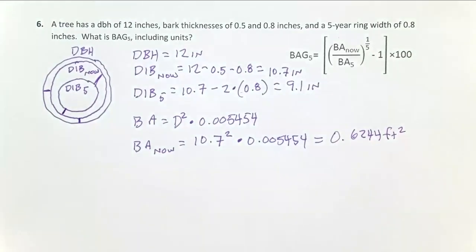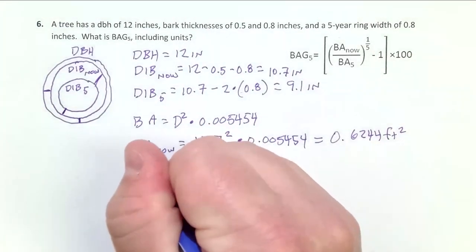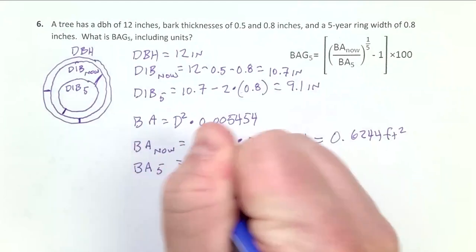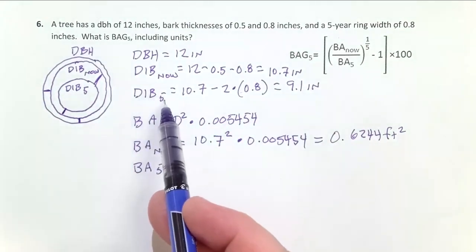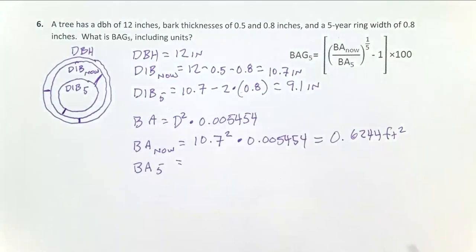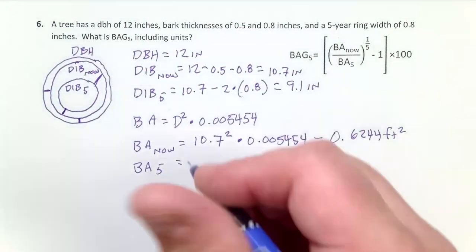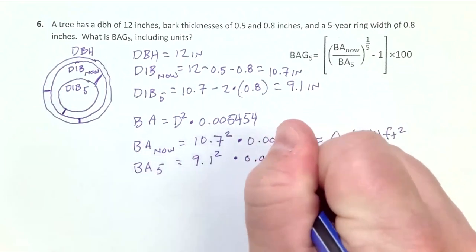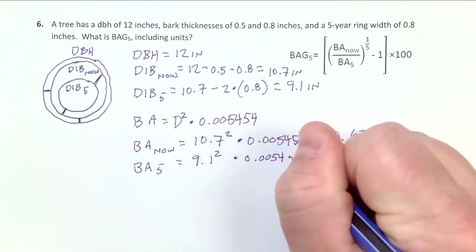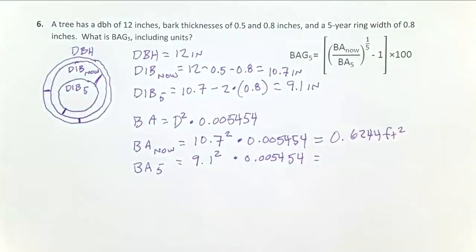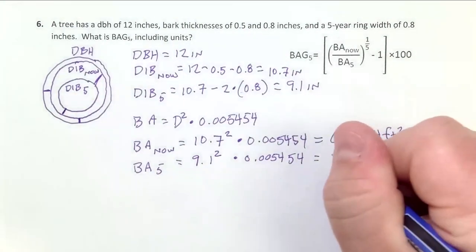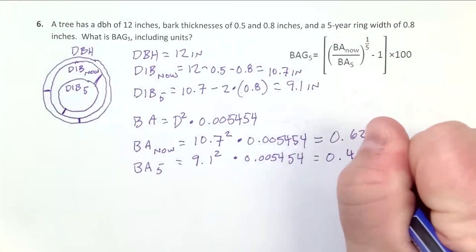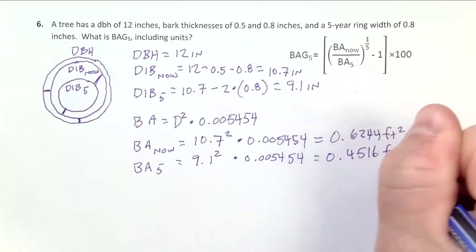We do the same thing for five years ago. Basal area five years ago is going to equal the diameter inside the bark five years ago, not now, which is always smaller because trees don't shrink in diameter. So it's 9.1 inches squared times 0.005454, which equals 0.4516 feet squared.